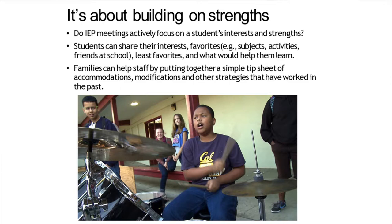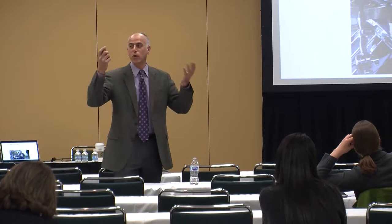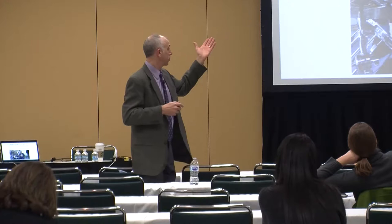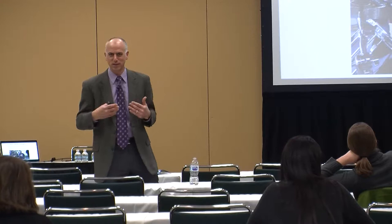If the IEP is not strength-based, something is wrong with the process — and I think this is a real disincentive for families to be engaged. I would love for all meetings to start with strengths: let's build off the strengths of this child and make sure they're written clearly in the IEP. Students can share their own interests and favorites — it doesn't have to be 'how do you learn' — it could be 'what's your favorite subject, what's the best part of your school day.'